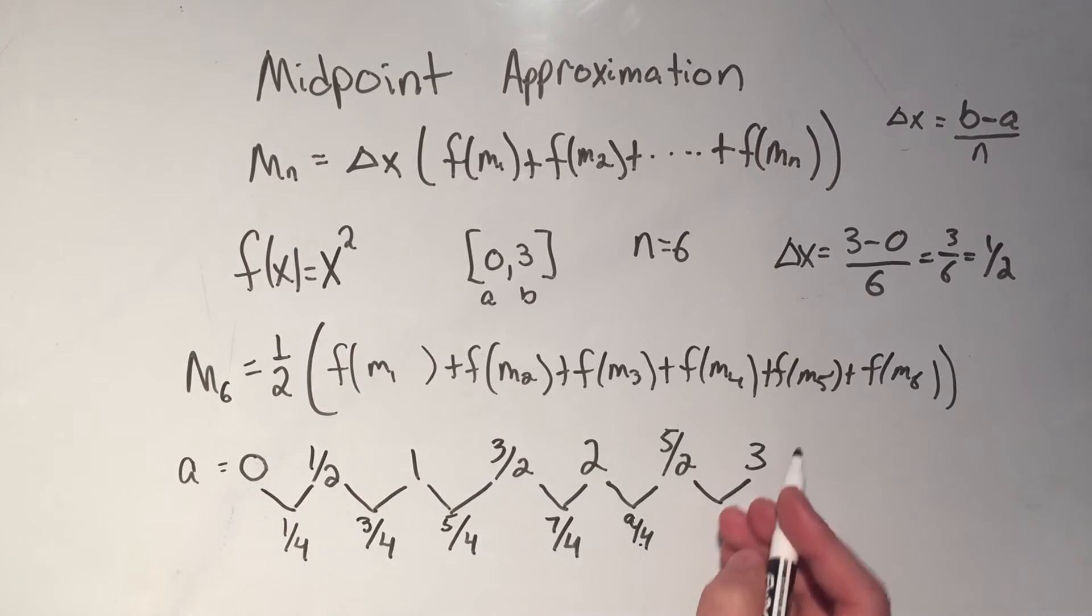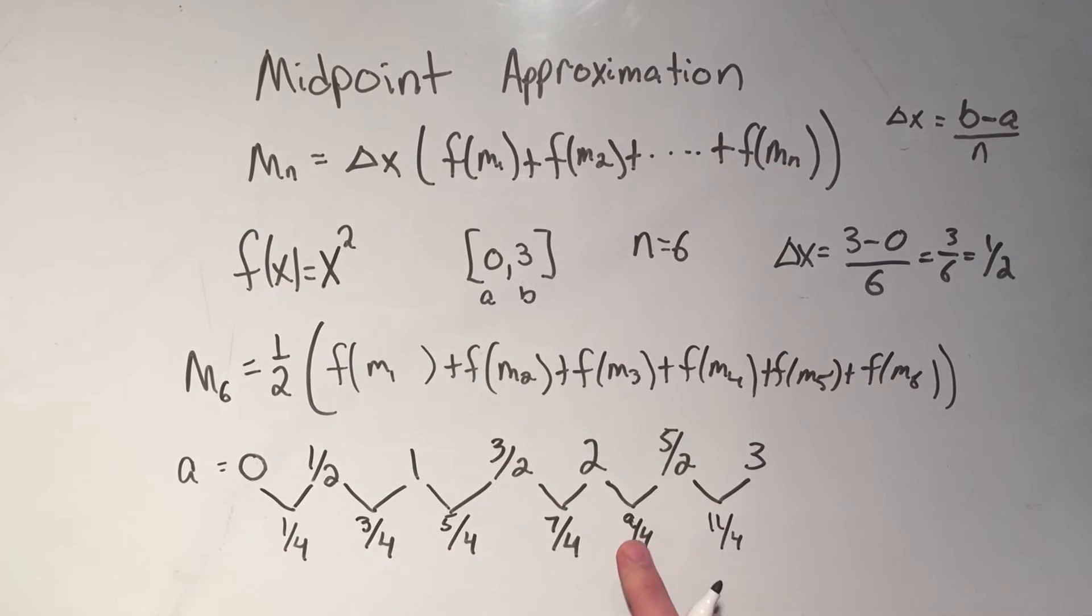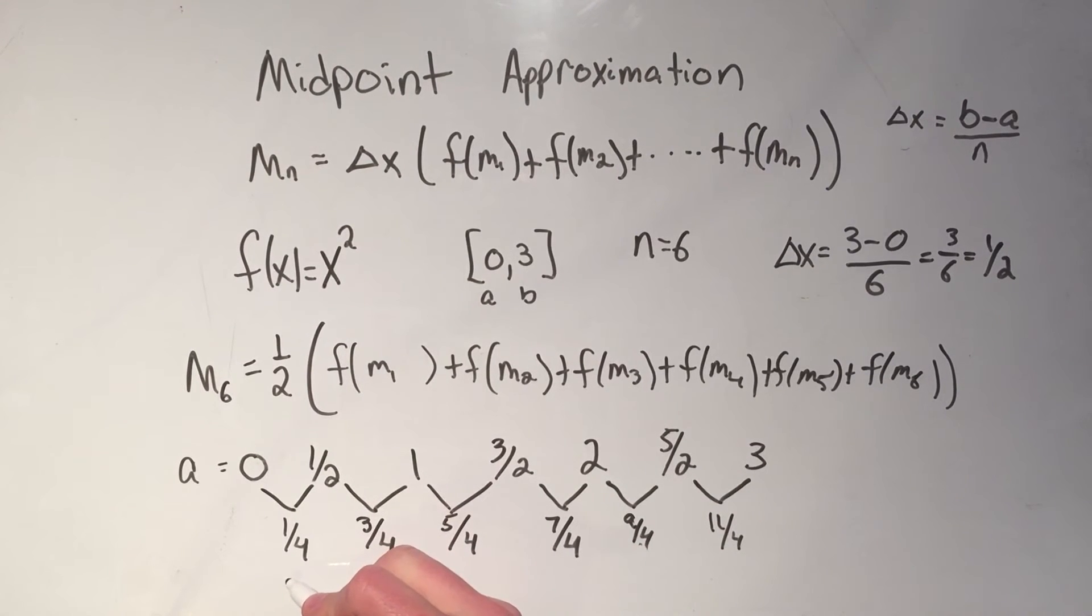And then the average between 5 halves and 3, that's going to be 11 fourths. So now these, these things here, are what I'm plugging in to my function.